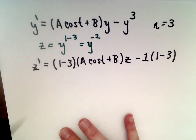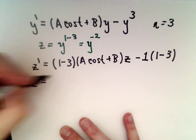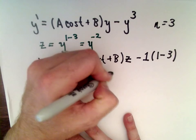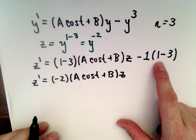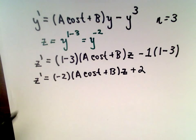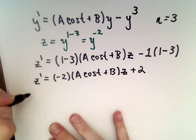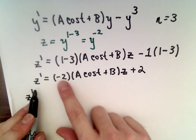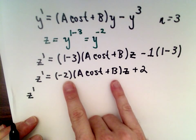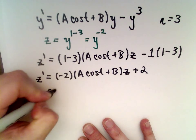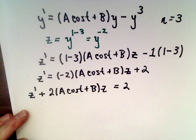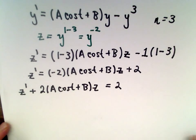Simplifying, we get z prime equals negative 2 multiplied by a cosine of t plus b, multiplied by z. Then negative 1 multiplied by negative 2 gives us positive 2. To put this in the correct form for integrating factors, we put all the z's and z primes on the same side. So z prime plus 2 times a cosine of t plus b times z equals positive 2. Now it's relatively mechanical if you've seen the other examples.